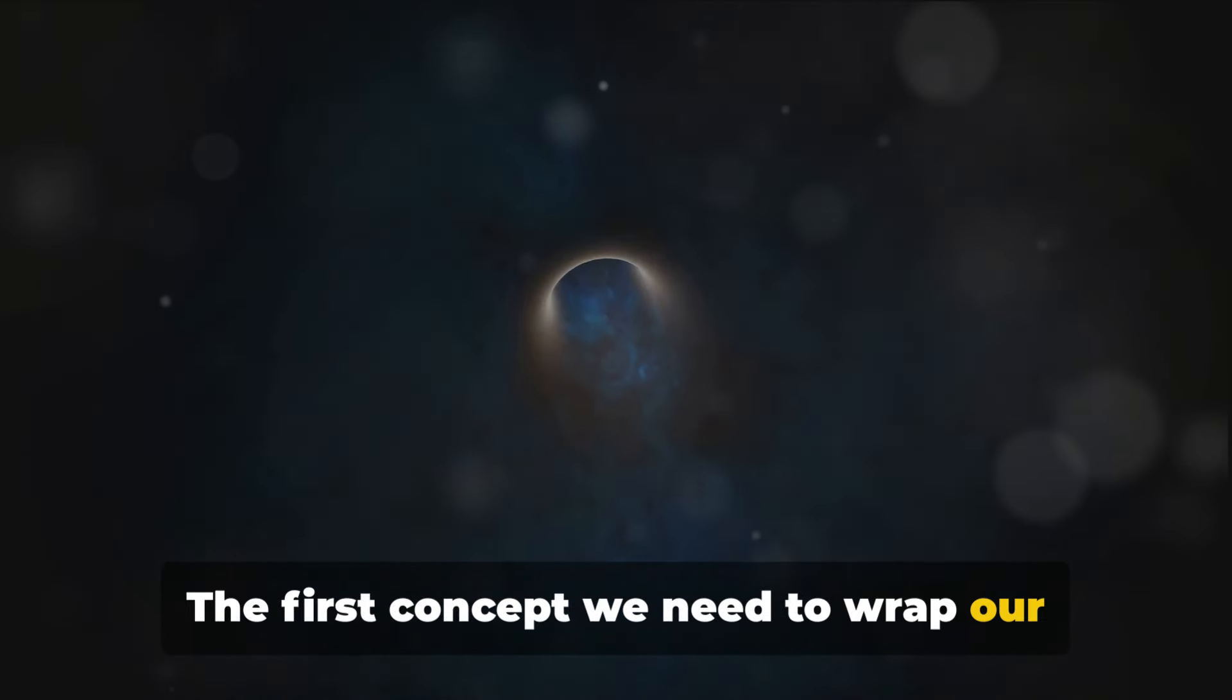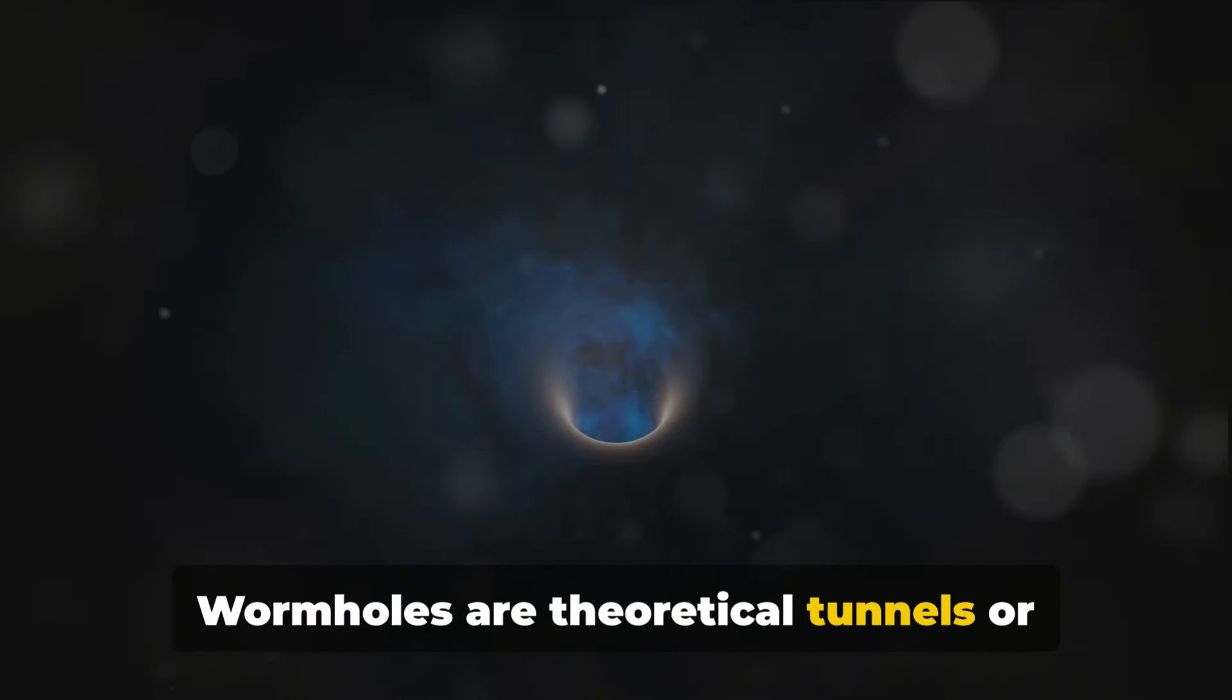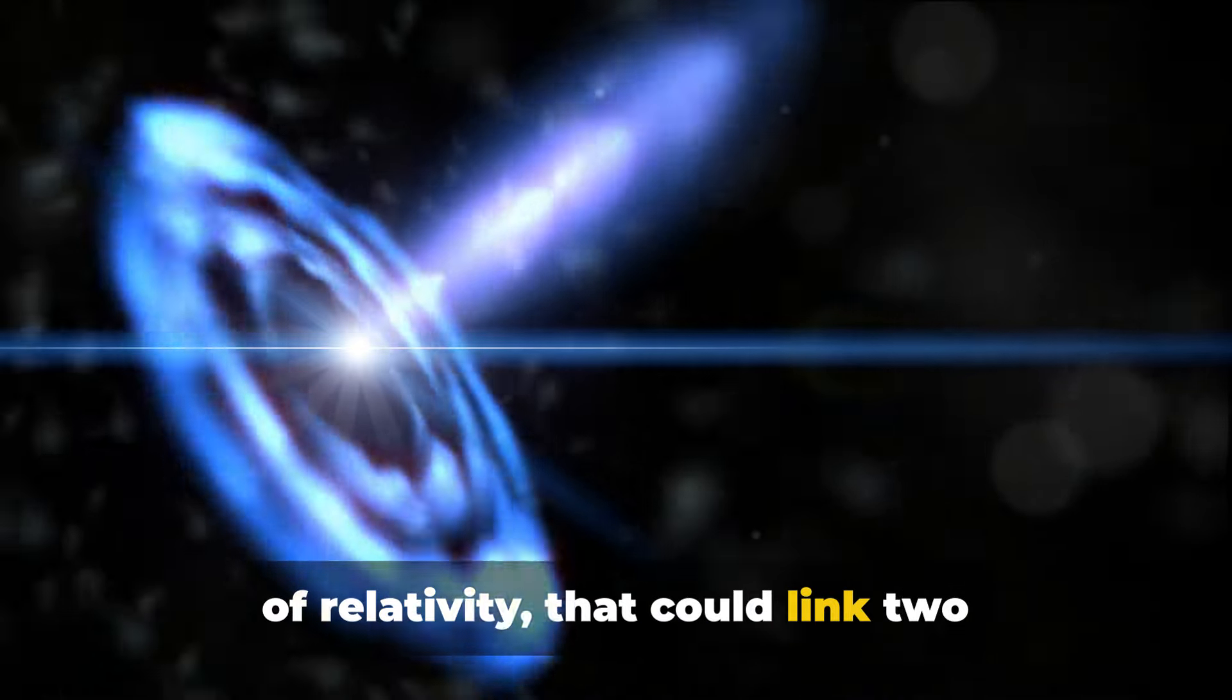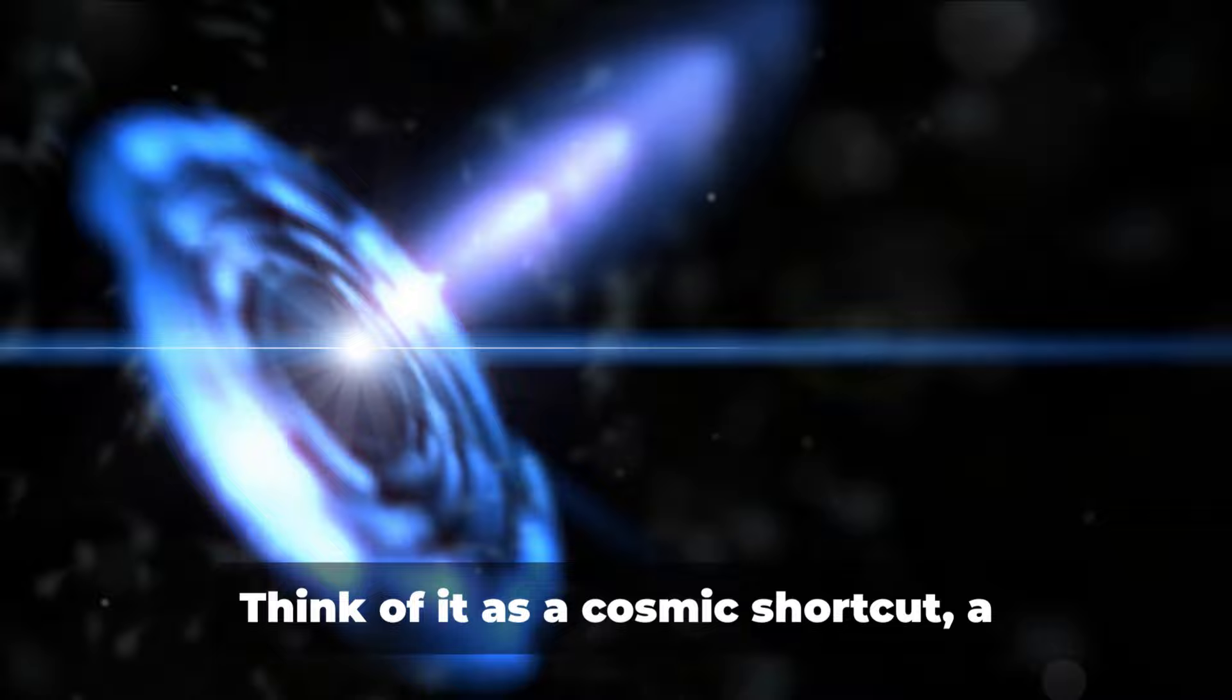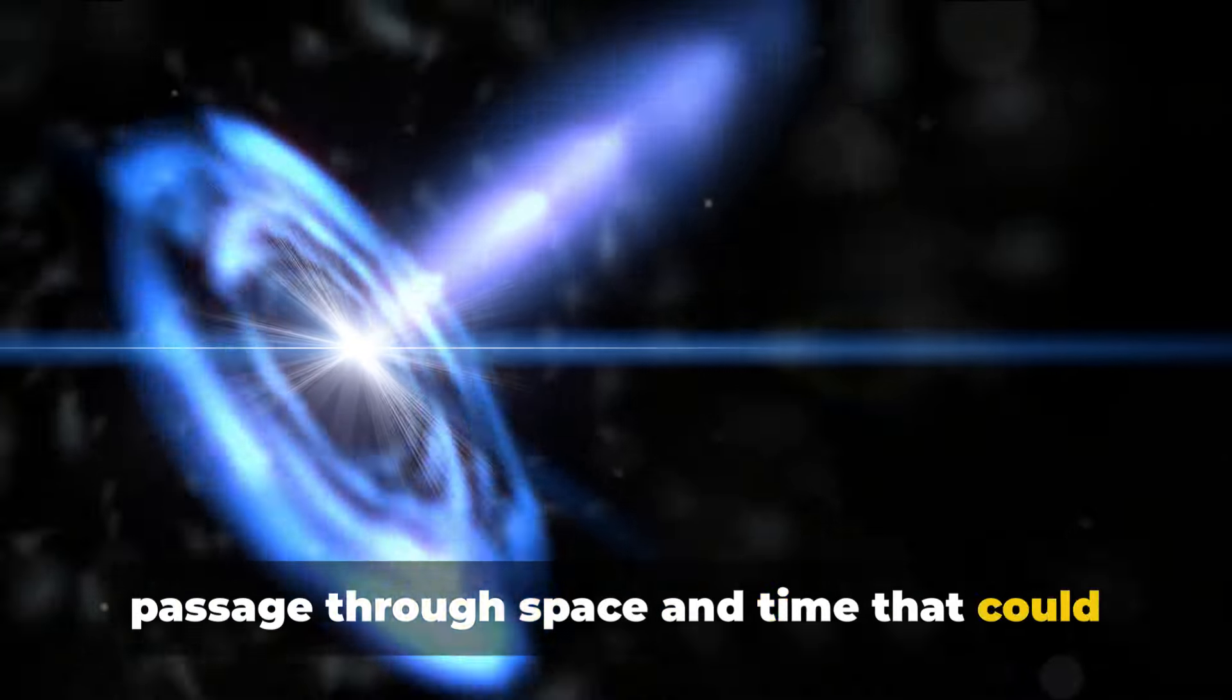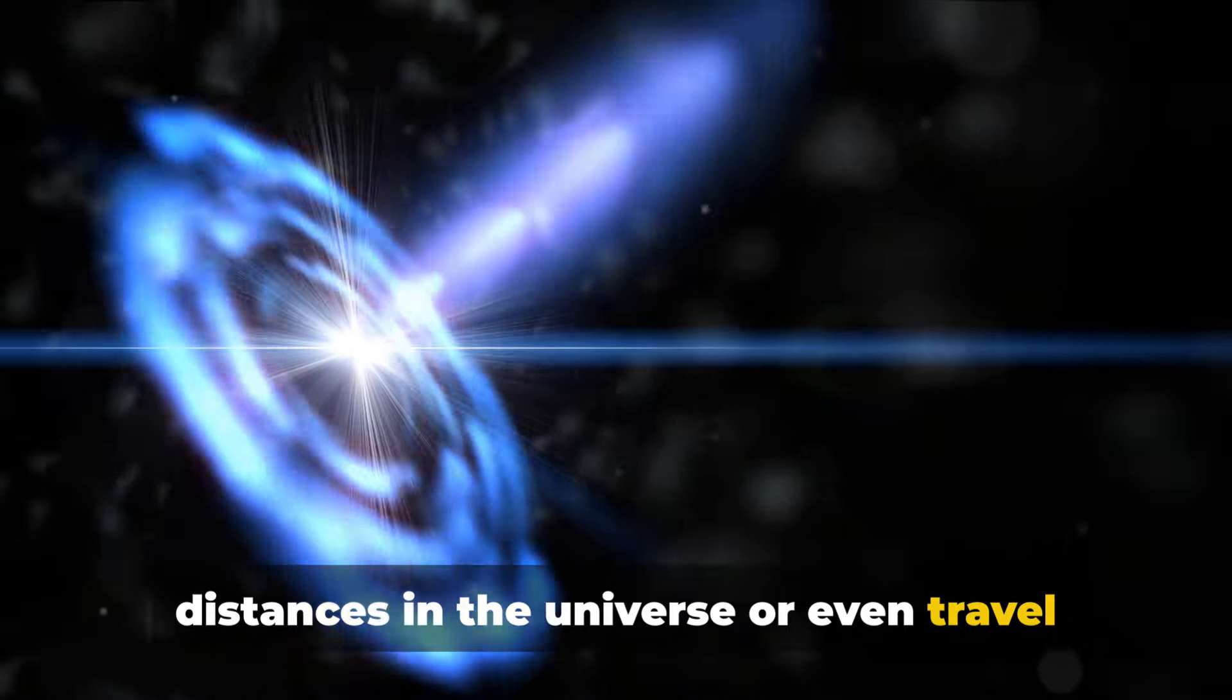The first concept we need to wrap our heads around is the concept of wormholes. Wormholes are theoretical tunnels or shortcuts proposed by Einstein's theory of relativity that could link two different points in spacetime. Think of it as a cosmic shortcut, a passage through space and time that could potentially allow us to leap vast distances in the universe or even travel in time.